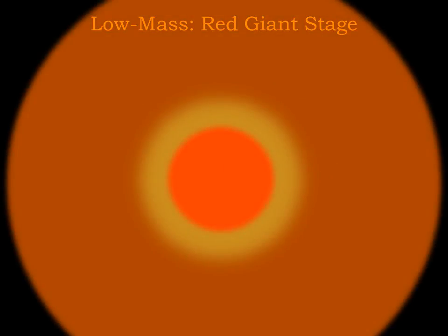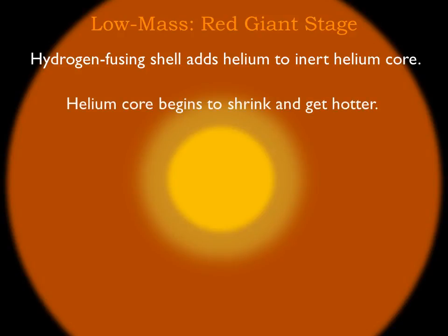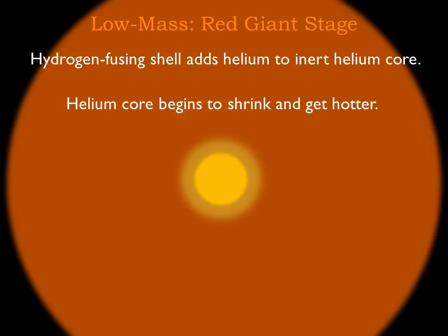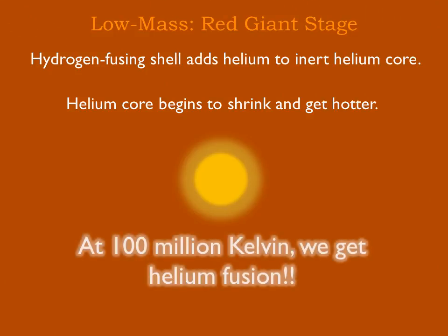As the hydrogen-fusing shell fuses, it creates helium and dumps that helium onto the core. The helium core gets more massive, and gravity causes it to shrink, becoming hotter and denser. So far, the helium core hasn't been doing anything — it's inert — and therefore can't expand to balance out the extra pressure. The core and shell continue to shrink and heat up, but the star is becoming larger and more luminous. Once the core reaches about 100 million Kelvin, it will be hot enough for the helium nuclei to fuse, and the sun will enter the next stage of its life.